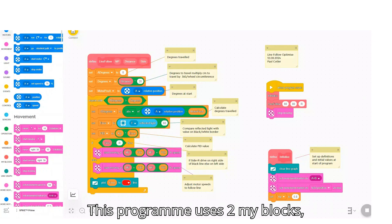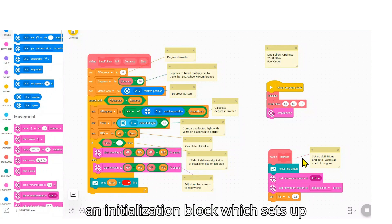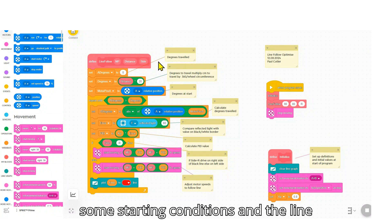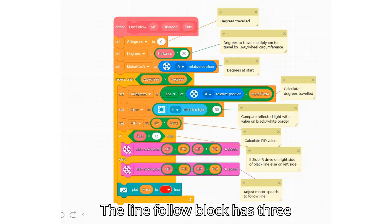This program uses two my blocks. An initialization block which sets up some starting conditions and the line follow block to drive the robot. The line follow block has three parameters.